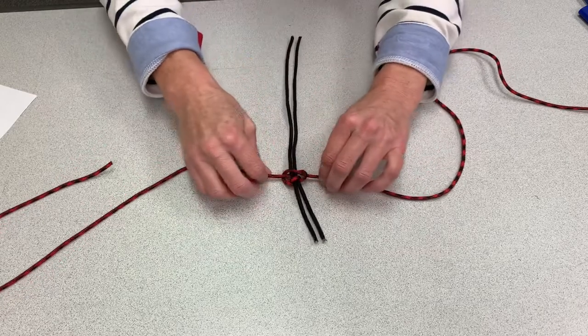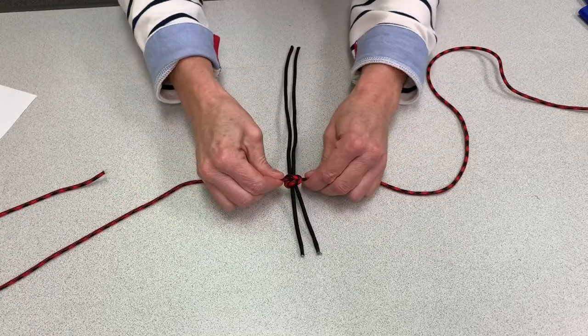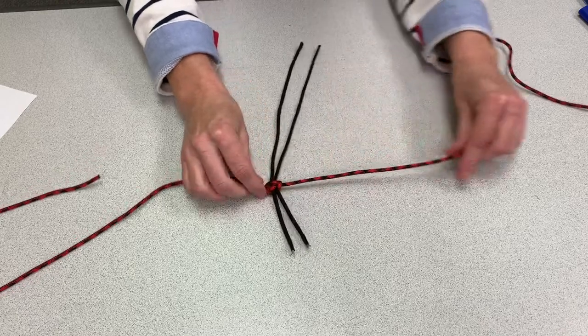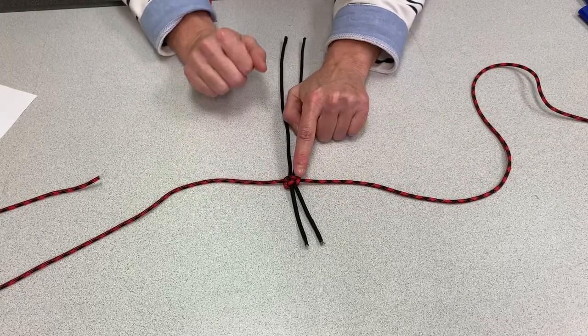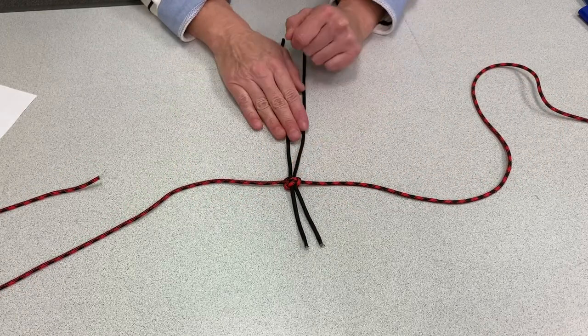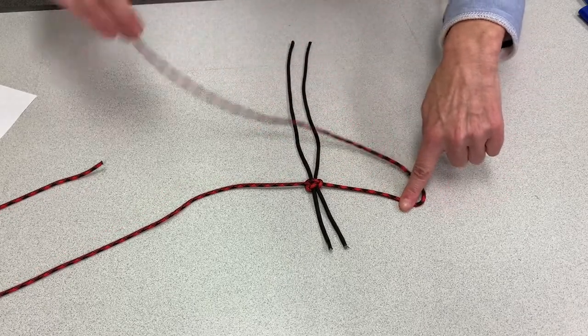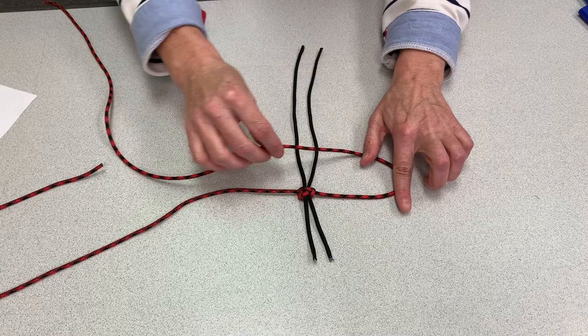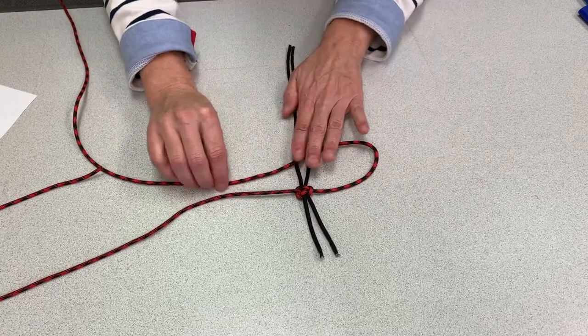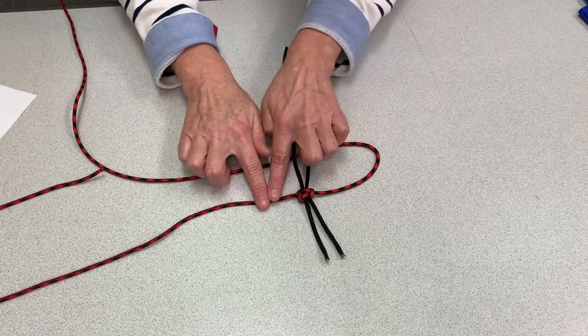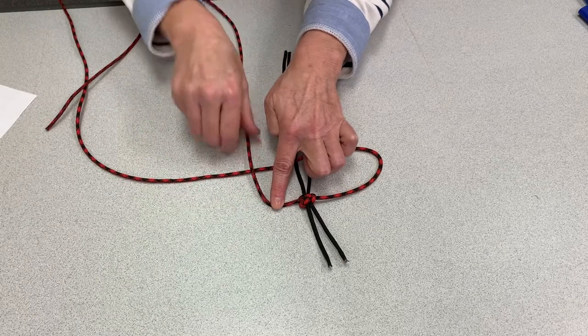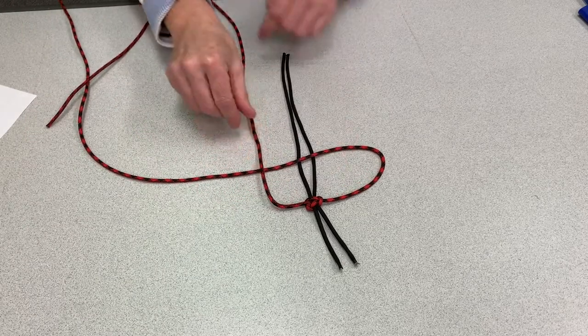And then, I tighten it, like so. And now I see the knot is on this side. So I know I'm going to start with this cord. I'm going to loop it over on top of the black. Like that. I'm going to take the colored cord from this side. And loop it over this side.